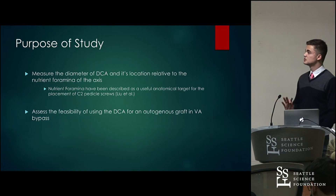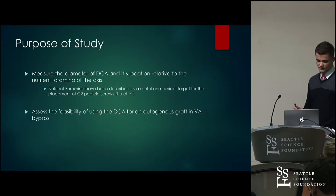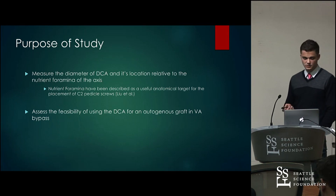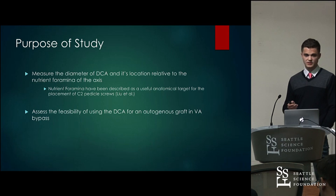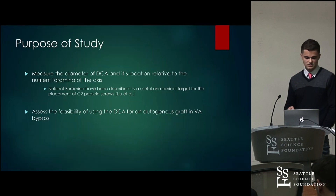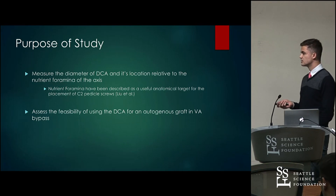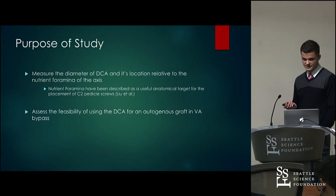I'm going to talk a little bit about the purpose of the two parts of this study. The first part revolves around the nutrient foramina — specifically the diameter of the deep cervical artery at multiple points and its location relative to the nutrient foramina of the axis. The second part of the study focused on assessing the feasibility of using the deep cervical artery for an autogenous graft in vertebral artery bypasses. We'll start with the first part and then move on to the second.